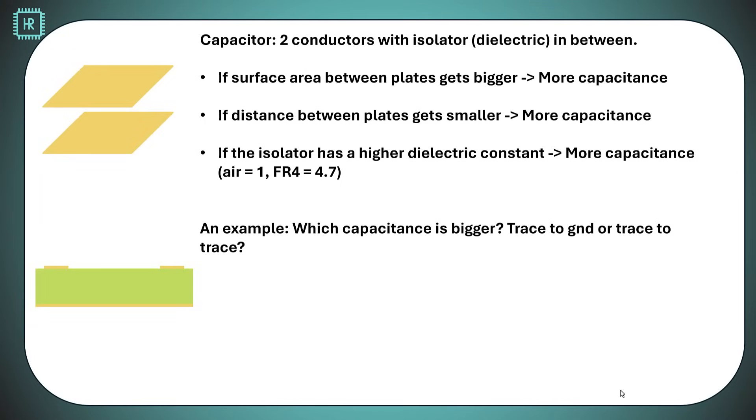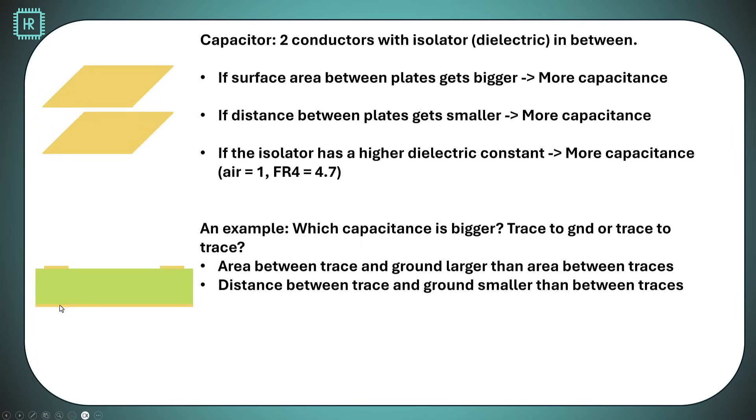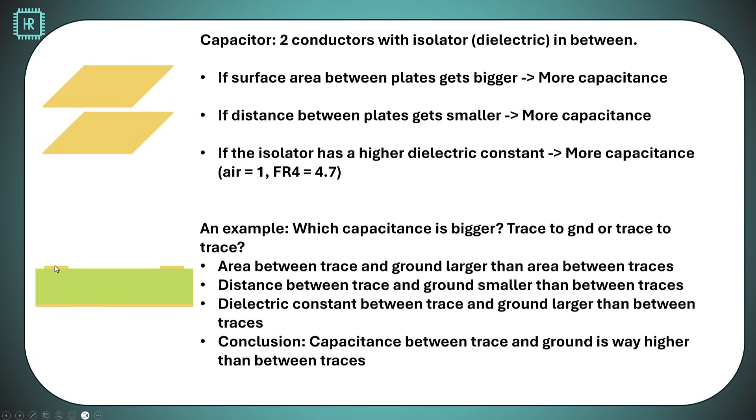Let's have a look at an example. Let's assume we have this board cross-section. You have two traces on the top layer of a board, and on the bottom layer, you have a ground plane. You want to know which is bigger, the capacitance from this trace to ground, or between these two traces. The area between trace and ground is much larger than the area between these two traces. The distance between trace and ground is much smaller than the distance between these two traces. The dielectric constant between this trace and ground is 4.7, and between these traces is 1. The overall conclusion is that the capacitance between this trace and ground is way, way, way larger than the capacitance between these two traces.